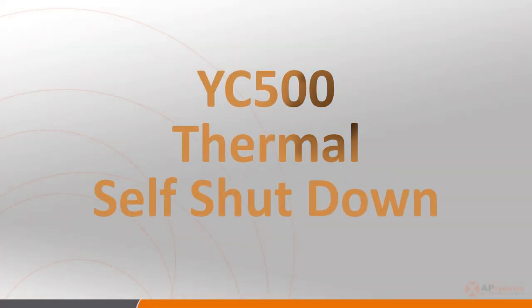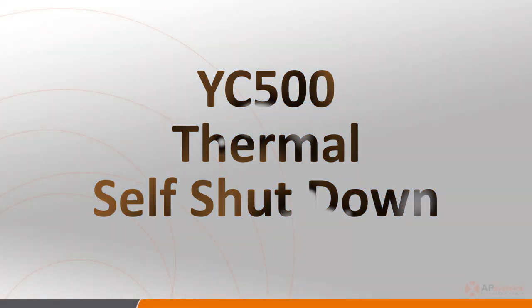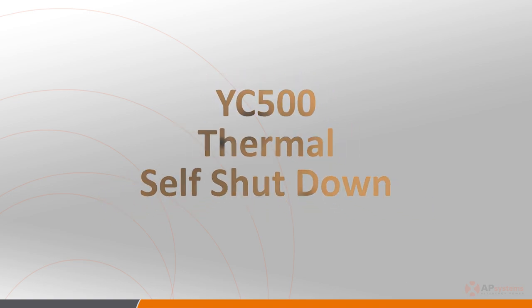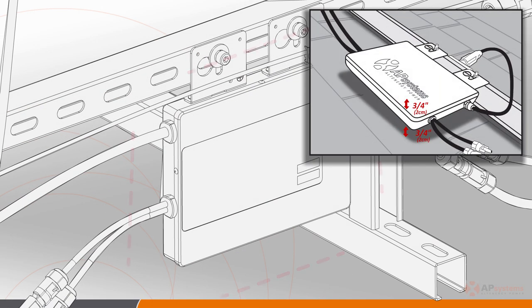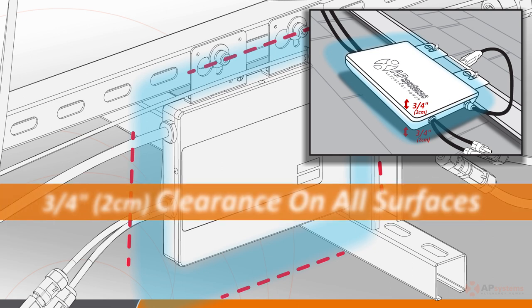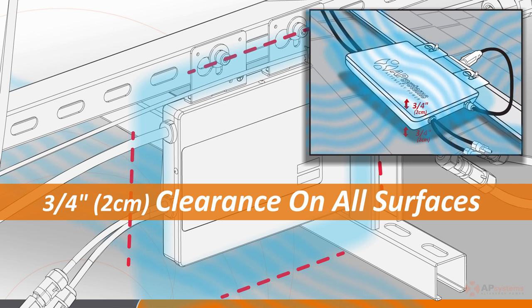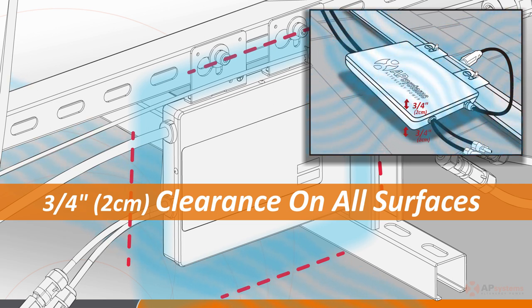As a safety measure and out of self-preservation, the YC500 will shut itself down when it reaches the upper limit of its operating temperature range. It is also extremely important to allow at least three-quarters of an inch between the roof or mounting surface and the bottom of the inverter. This spacing is important for cooling airflow to reach all surfaces of the inverter.